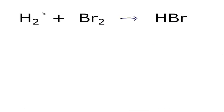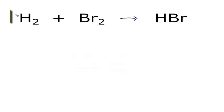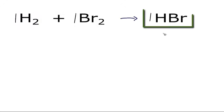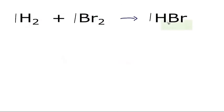When we look at equations, the numbers in front — the coefficients — are the only thing we can change. Right now, even though it's not written, there's a 1 here, a 1 here, and a 1 in front of the HBr. The numbers we can't change are the subscripts, these numbers after. And if there's nothing written, we assume it to be a 1.